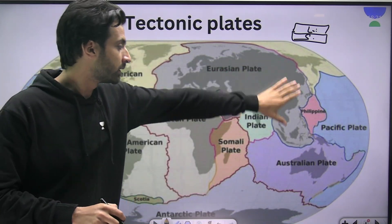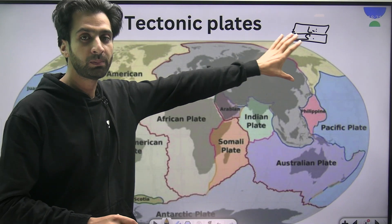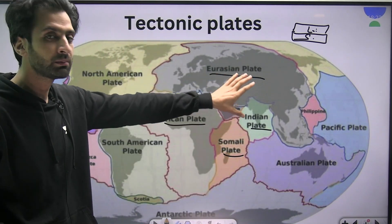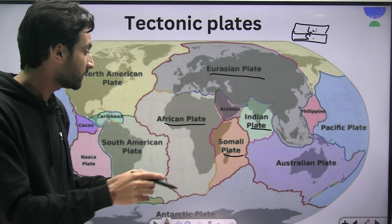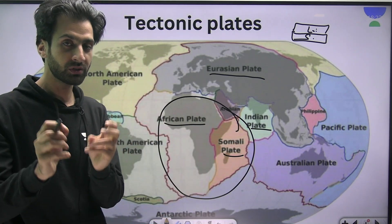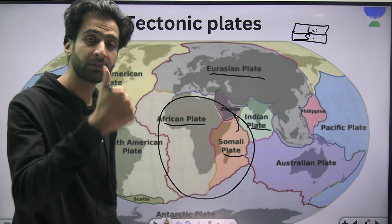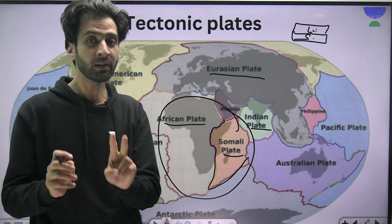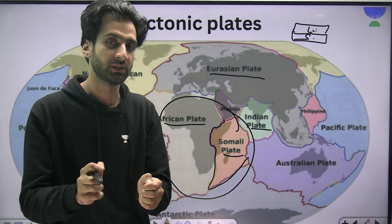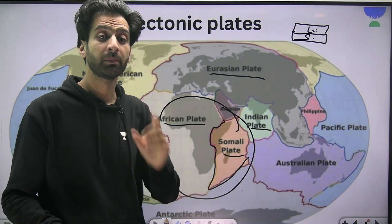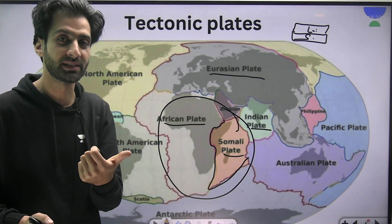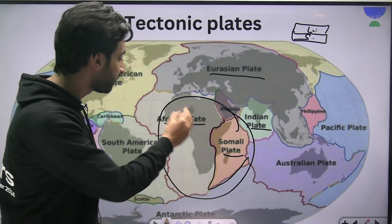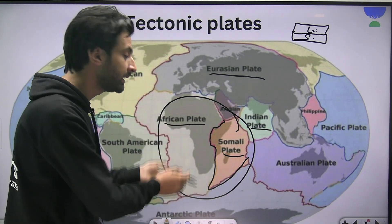This is the map of the world showing all tectonic plates — you have the Eurasian plate, Indian plate, African plate, Somali plate, and others. You don't have to remember all these names right now because we are primarily concerned with the African region. The African region comprises two plates: the African plate and the Somali plate. The lines drawn here are the plate boundaries where the two plates interact with each other, and this is very important because plate boundaries decide what will happen — rifting or mountain building — everything.